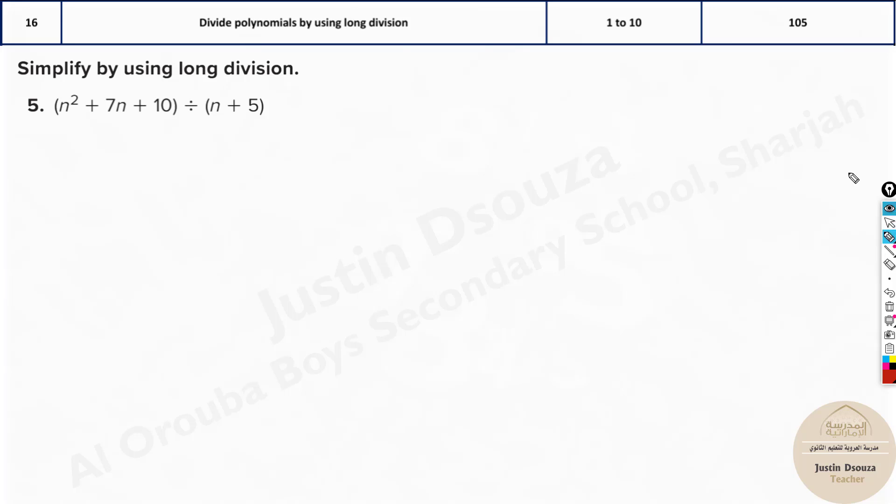This one will require long division. Why? Because it's not monomial anymore, it's a binomial. Now how we solve such problems is, this is the divisor, the dividend. So what I do is I just write like this. And whatever is given to be divided, n² plus 7n plus 10, write it out over here. And what are you dividing it with? The divisor is n plus 5. Now you need to be very careful. To start, you need to start with this first term and this first term.